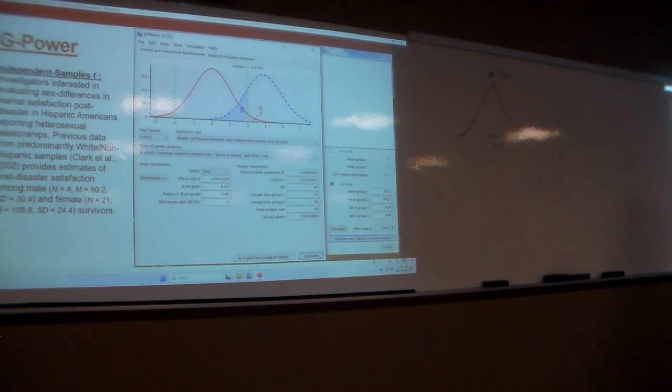Again, we're looking at a priori power, two-tailed test. This defaults to one, make sure you change that so it's only two sample tests. Effect size, same thing. If you've already calculated your effect size, just put it in there. If you haven't, you can hit determine: mean, mean, standard deviation, standard deviation, calculate and transfer, moves it over. Looks like we actually have a pretty large effect size here, about one. We're doing 0.05, 0.80, and then my allocation ratio.